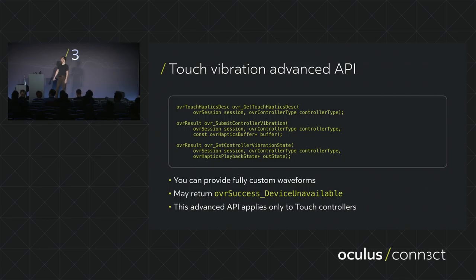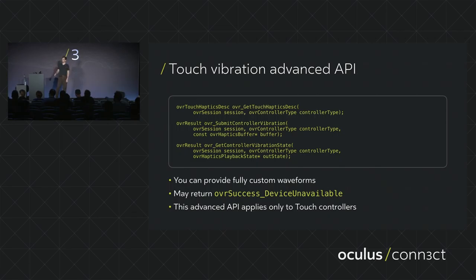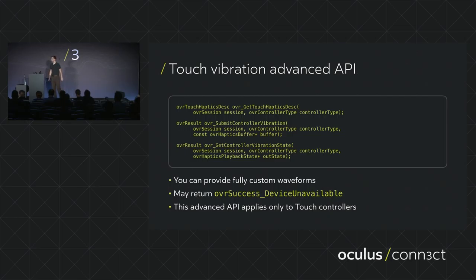There's also an advanced haptics API with three functions: get touch haptics desc, submit controller vibration, and get controller vibration state. This allows you to supply a waveform buffer — an amplitude waveform it automatically executes, kind of like a wave file. We have samples that will load and execute a wave file on the touch controller. The haptics desc provides information about the bit rate of this buffer, and get vibration state tells you how far through the buffer you are. This API only applies to touch controllers, not Xbox or Oculus remote.